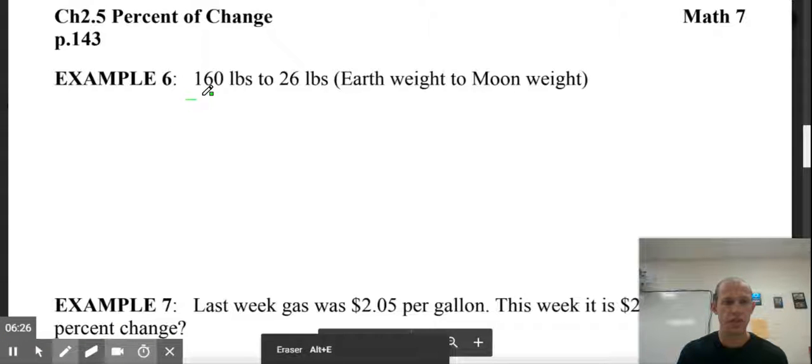So I'm going to subtract 26 from 160. I'm going to think about this as 160 minus 30, which would give me out 130. But I don't have to take away 4. So I'm going to add 4 to it. So it's 134. So that's my change. 134 pounds divided by my original, and I was 160 pounds.